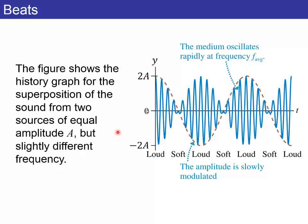This figure shows the history graph, meaning Y versus T, for the superposition of two sound waves of equal amplitude, but slightly different frequency. And so what happens is you get a fast oscillation at the average frequency of the two frequencies, and then the amplitude is slowly modulated by a frequency, which is the difference of the two frequencies. So I have a couple of animations to show you to sort of explain this.